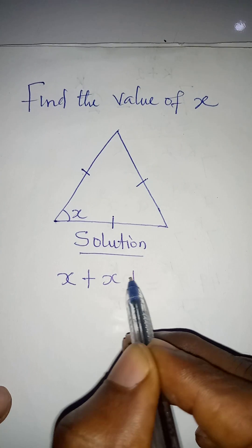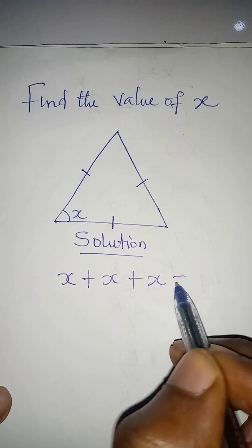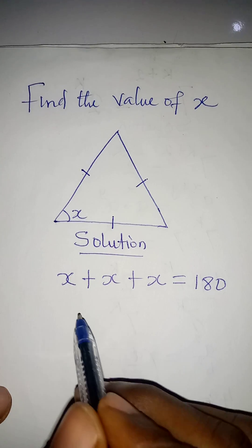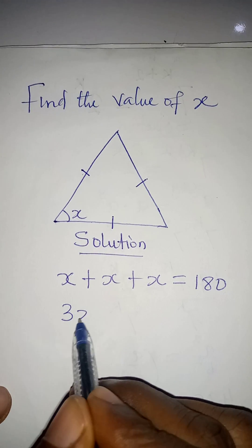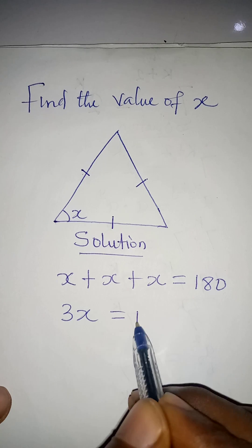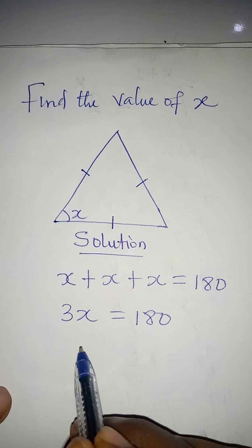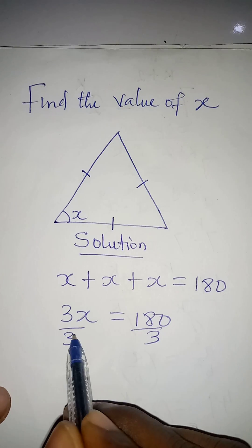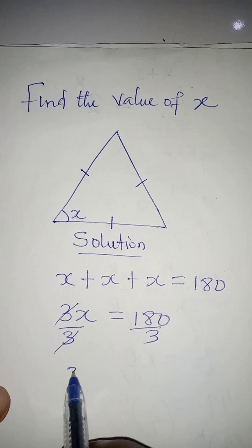And then I will add all of them together so that it will be equal to 180, and then here I'll have 3x to be equal to 180. Then I can divide by 3 and divide by 3. This cancels this, and x